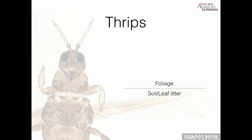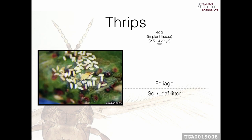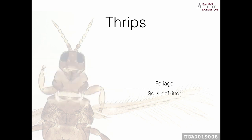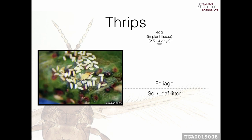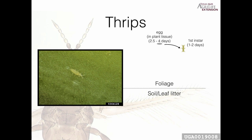In terms of their general life cycle, they tend to lay their eggs in the plant tissue, staying in that egg stage between two and a half to four days — depending on factors such as temperature. The warmer it is, the quicker they develop. Then you get the first instar, the first immature stage that comes out of the egg. At this point they're ready to start feeding, and they're very hard to see with the naked eye.